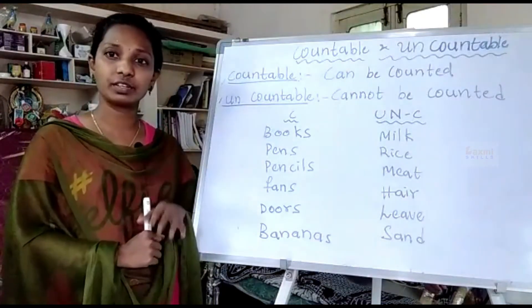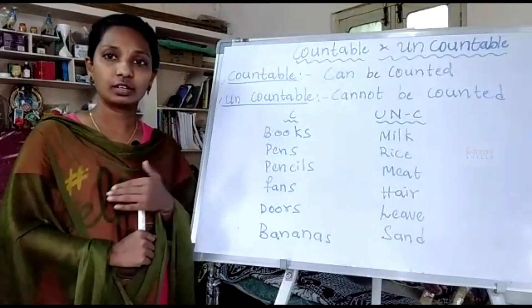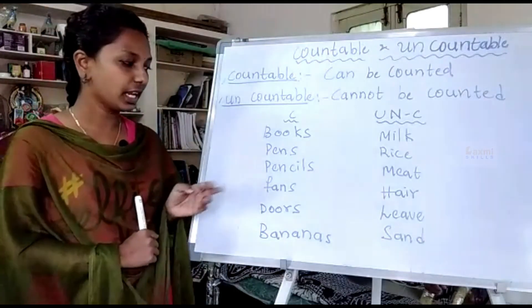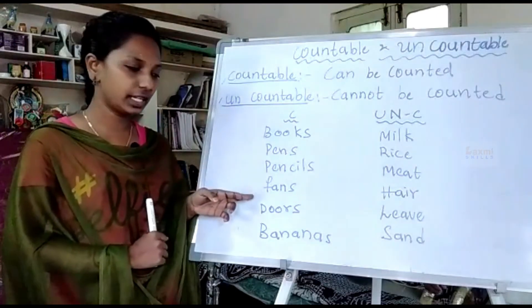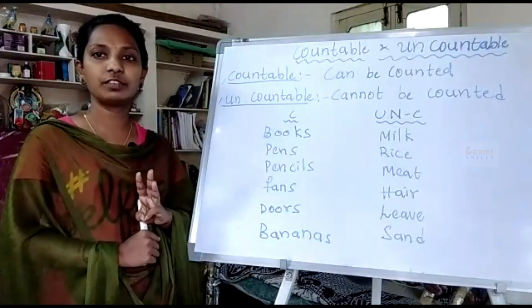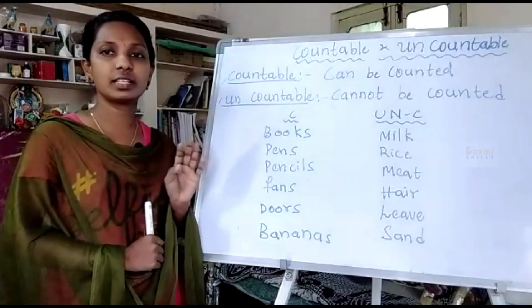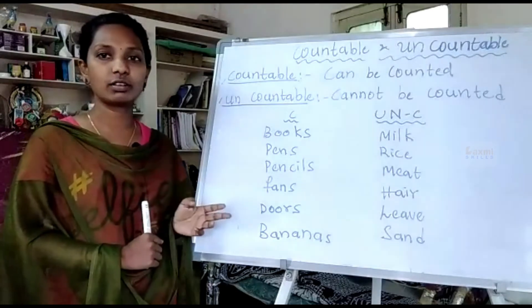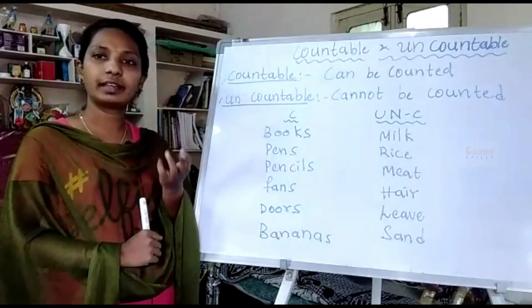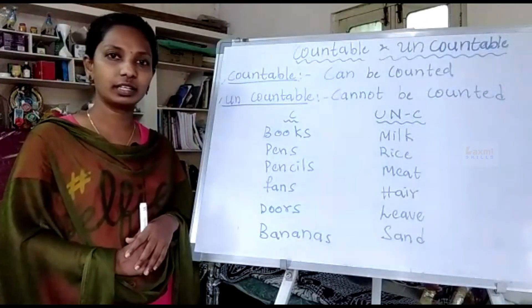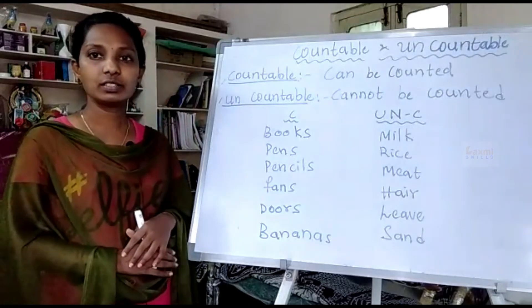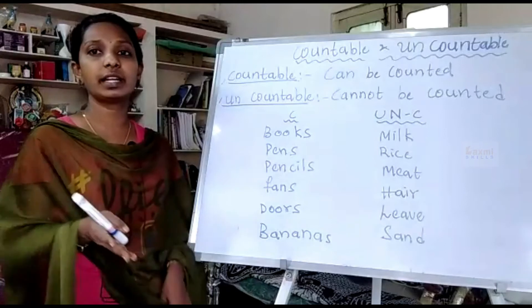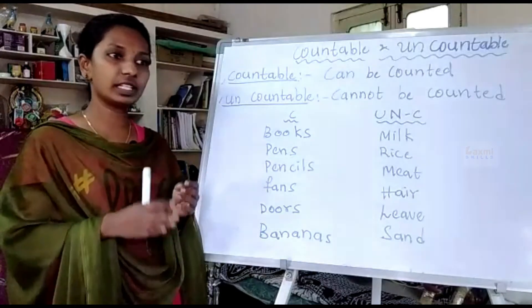It is easy to remember if we use words we cross in our daily life. Fans are countable — 'All our three fans are under repair.' For uncountable, take hair: we can never count hair, and there is a lot of variation between one person's hair and another's, because it depends upon the follicles present on the scalp.